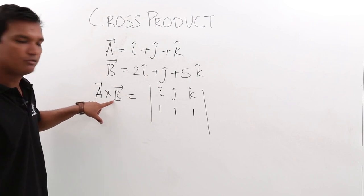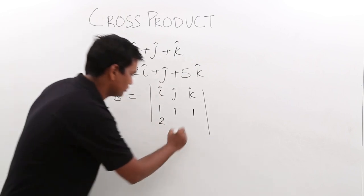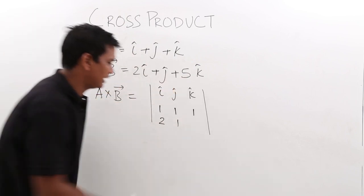In the same way, for the b vector, the magnitude along i cap is 2, the magnitude along j is 1, the magnitude along k cap is 5.